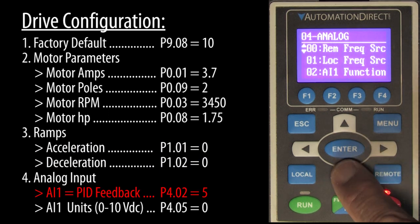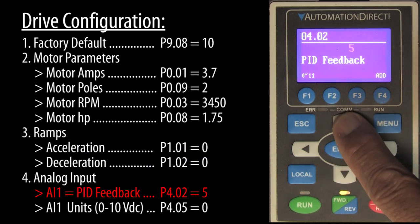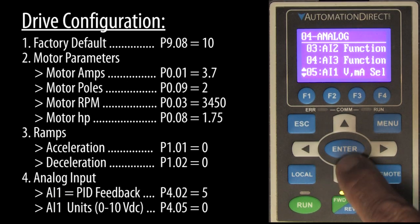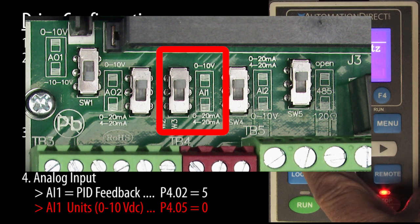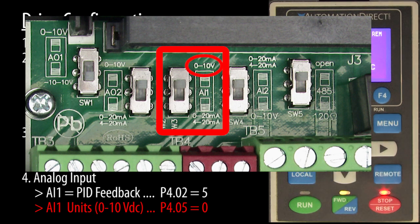We need to tell the drive that we're using analog input 1 as the PID feedback signal and that it will be used as a 0 to 10 volt signal. We also need to make sure that the terminal board switch for analog input 1 is set to volts and not to current.